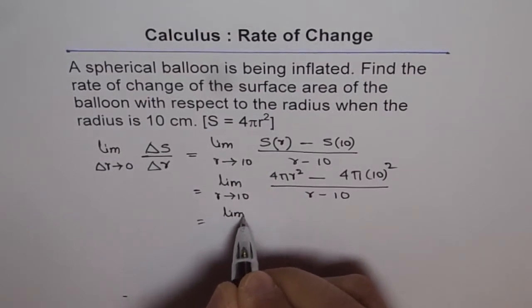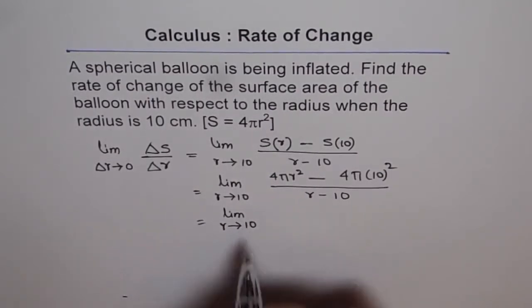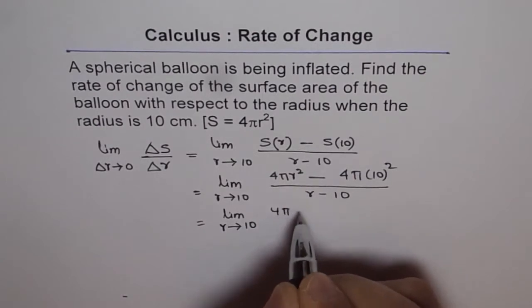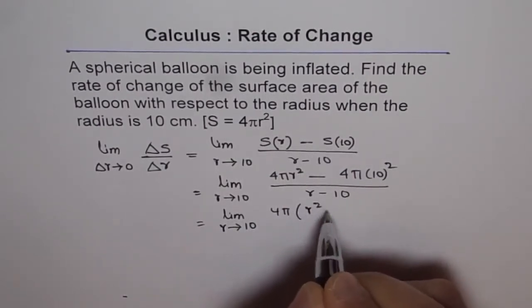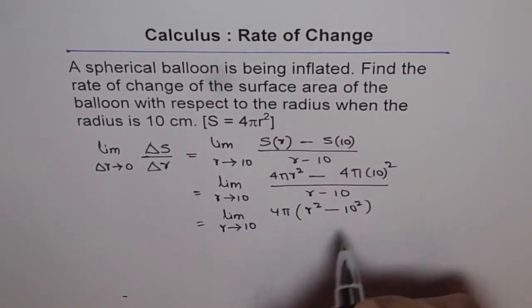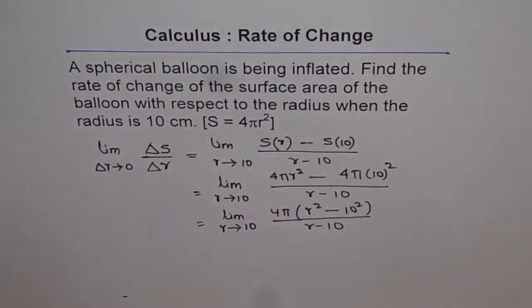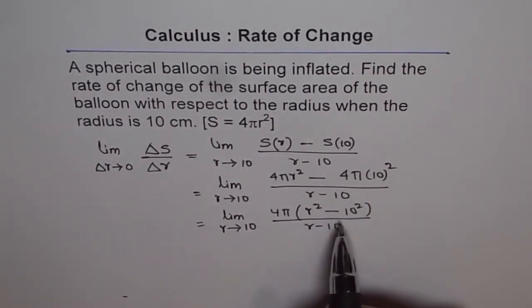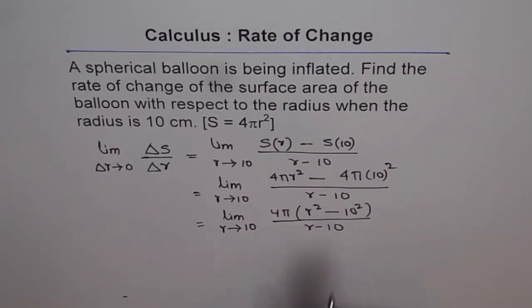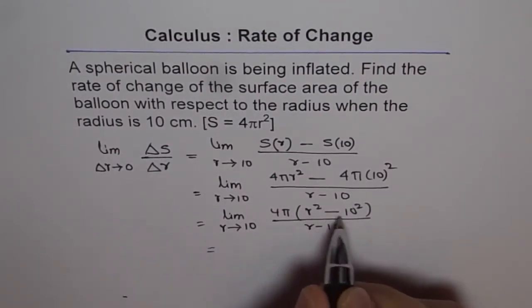Now, we get limit r approaching 10. 4 pi is common. So it is 4 pi and we are left with r square minus 10 square divided by r minus 10. Now, as you can see, we can simplify this. We can factor this difference of squares.